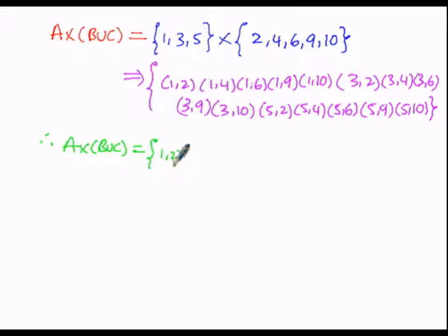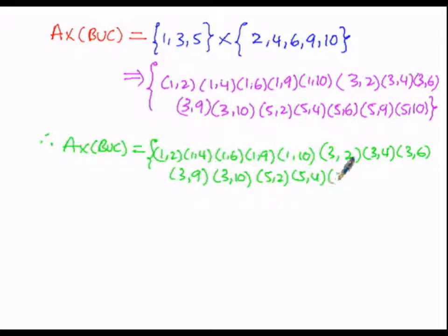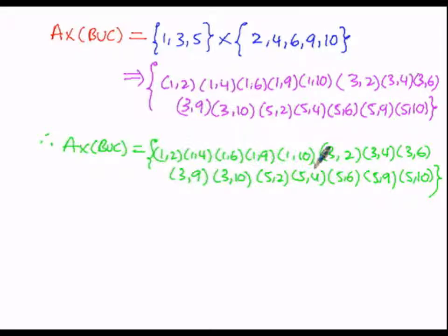Therefore A cross (B union C) = {(1,2), (1,4), (1,6), (1,9), (1,10), (3,2), (3,4), (3,6), (3,9), (3,10), (5,2), (5,4), (5,6), (5,9), (5,10)}. The first set has 3 elements and the second set has 5 elements, so there are 15 ordered pairs. This is our LHS. Let us write this as equation number 1.